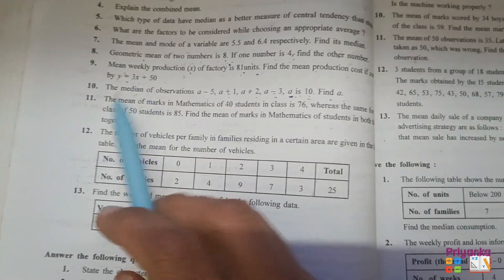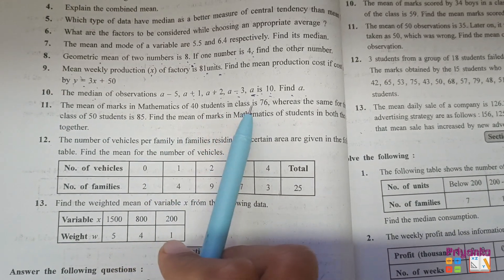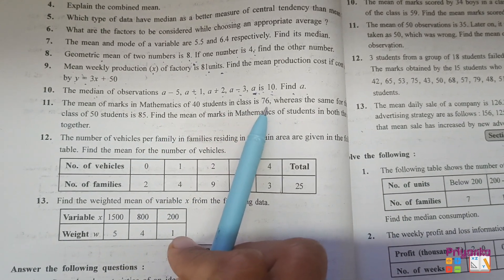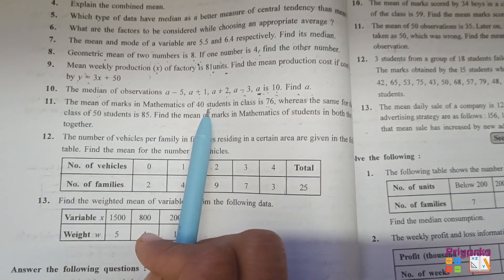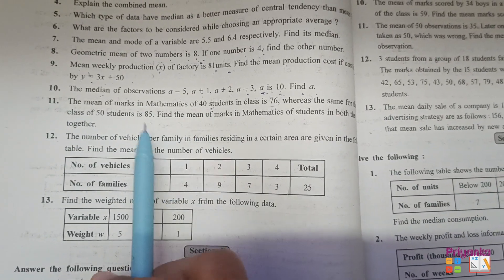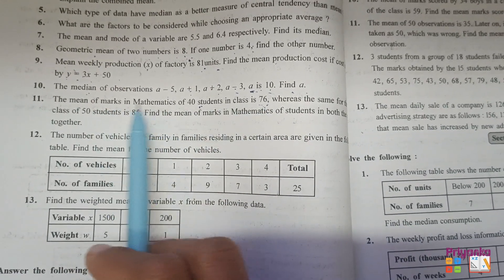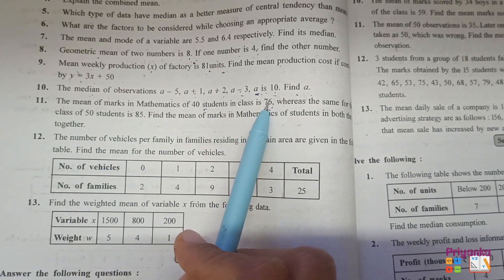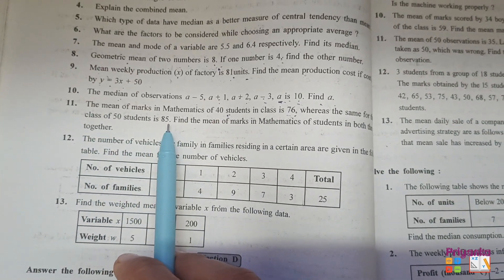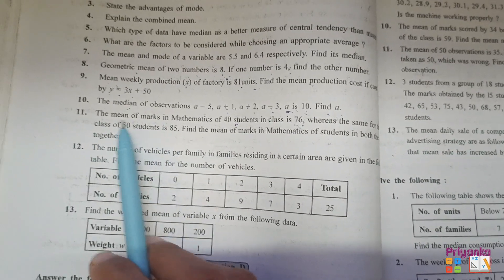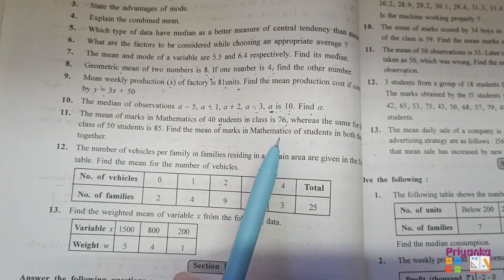Next question number 11. The mean of marks in mathematics of 40 students in class is 76. The mean is given as 76 and the number of students is 40. Whenever you read statistic questions, be sure what is given. Whereas the same for the class of 50 students is 85.